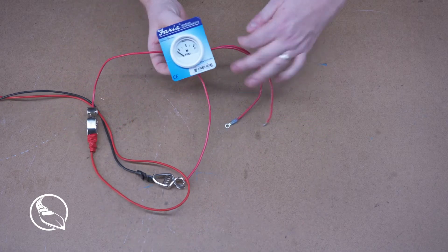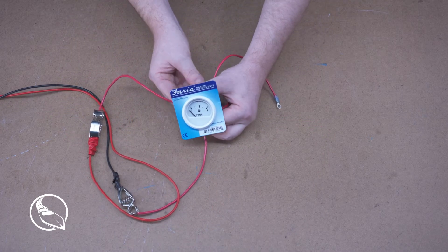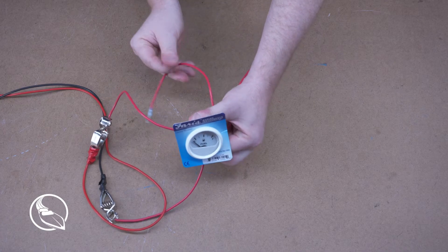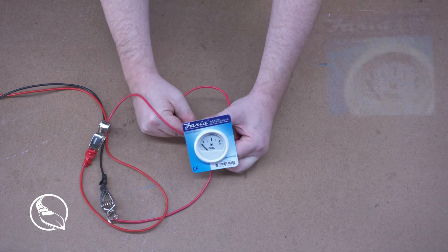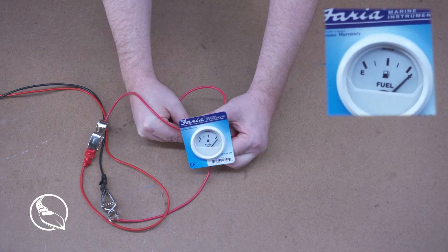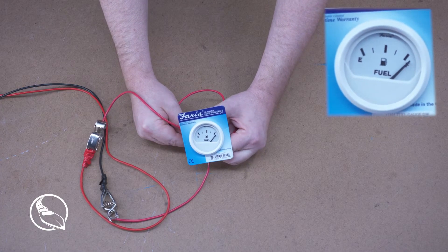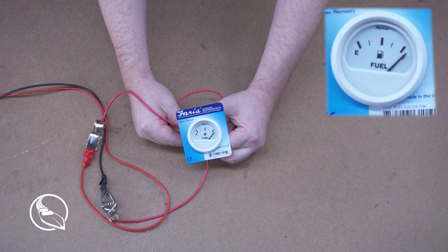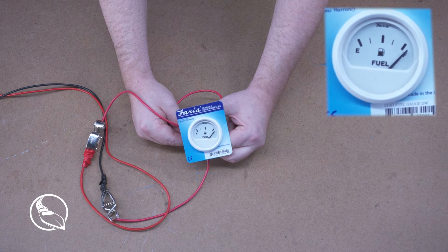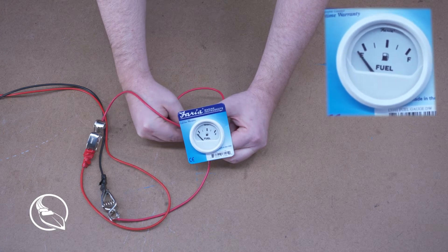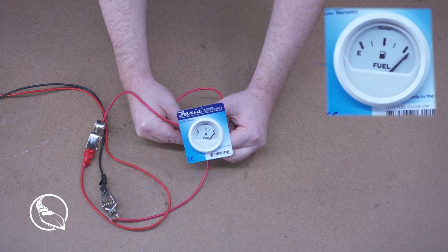So I'm going to flip this over and show you the face of the gauge here. And then I'm going to take my jumper wire, and I'm going to touch the ground post. And if the gauge reacts, then you know it's working, and you can see that it does. It moves all the way over to full so that we know the gauge is working properly.